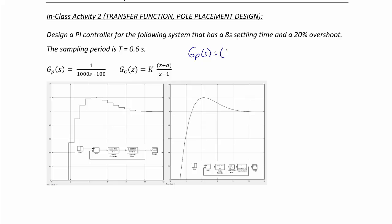GP of s is equal to 1 minus e to the negative st times GP of s over s, which equals 1 minus e to the negative st times 0.01 over s minus 0.01 over s plus 0.1.